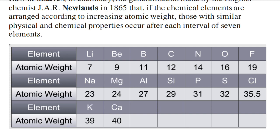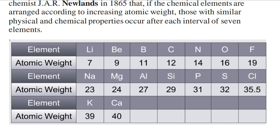Just as in music there are seven notes, similarly every eighth element has properties similar to the first. For example: Li, Be, B, C, N, O, F — then Na, Mg, Al, Si, P, S, Cl — and then K, Ca. Note that when Newlands' Law of Octaves was proposed, noble gases had not yet been discovered, so they are absent. Lithium and Sodium have similar properties, Beryllium and Magnesium, Boron and Aluminium, Carbon and Silicon, etc.